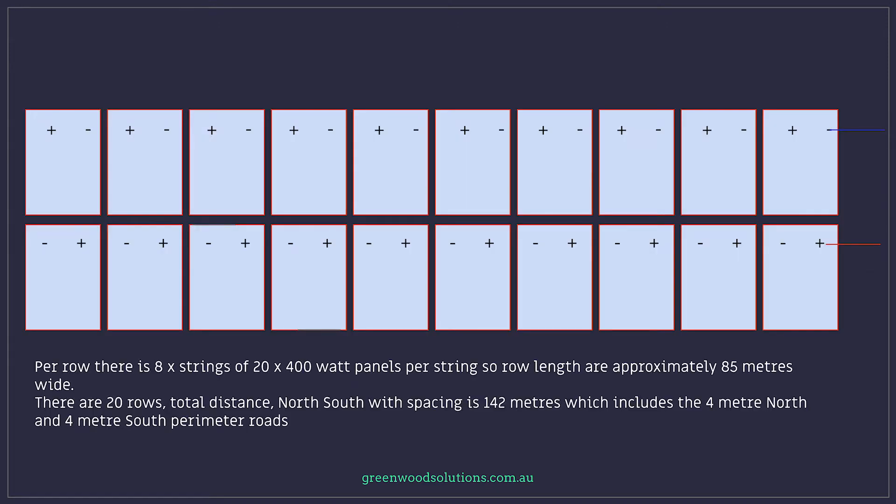Per row there's eight strings of 20 by 400 watt panels. So row lengths are approximately 85 metres wide. There are 20 rows and the total distance north-south with spacing is 142 metres, which includes the four metre north and four metre south perimeter roads or access roads.